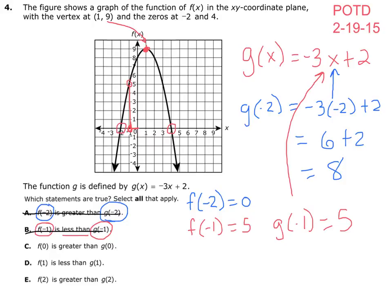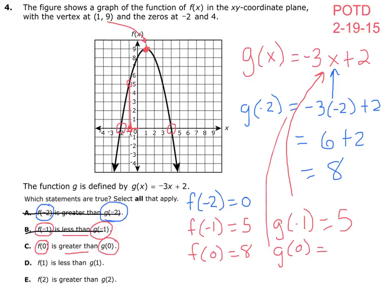Let's look at C. C says f of 0 is greater than g of 0. When x is 0 on f of x, y is all the way up here at 8, so f of 0 equals 8. For g of 0: negative 3 times 0 is 0, plus 2 is 2. Is f of 0, which was 8, greater than g of 0, which is 2? It is — so C is a good one.